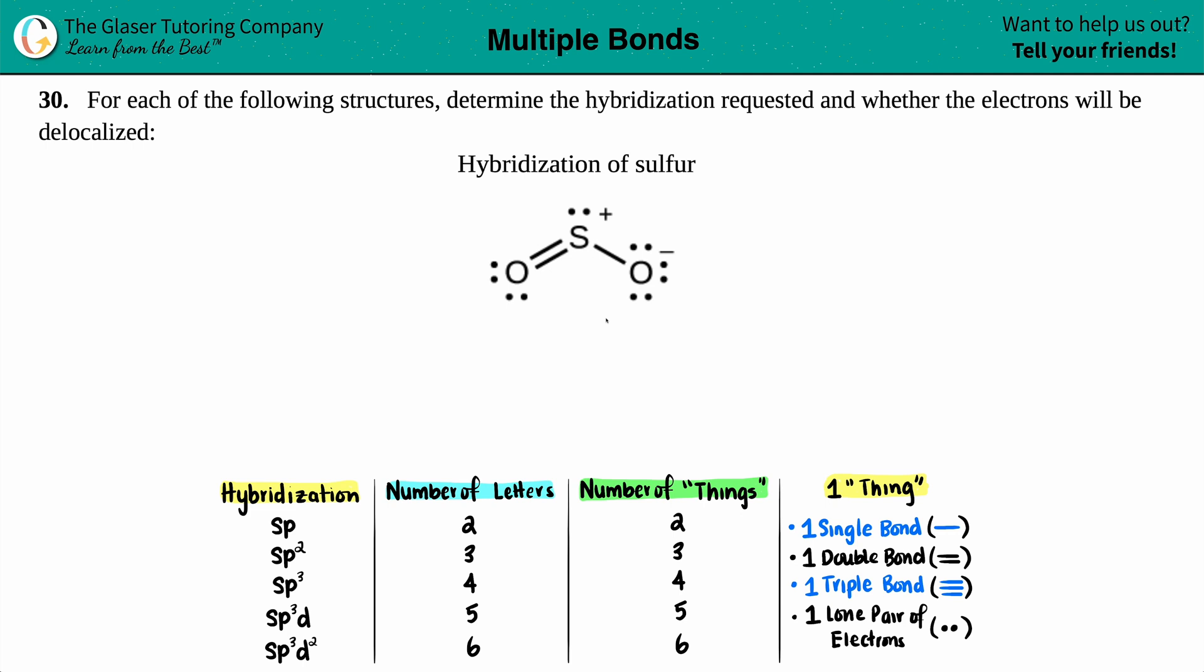Number 30: For each of the following structures, determine the hybridization requested and whether the electrons will be delocalized. Alright, and then we have the hybridization of sulfur. Thank you so much for providing the actual Lewis structure. Just know that whenever they're asking you for hybridization questions and you want to make your life a little easier, always draw the Lewis structure. From that, you'll be able to get the hybridization in no time.